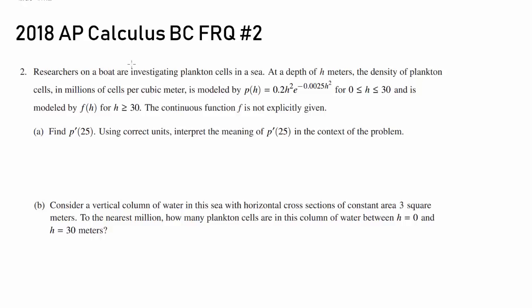Let's move on to problem number two. Researchers on a boat are investigating plankton cells in a sea. After escalator, we now have plankton. At a depth of H meters, the density of plankton cells in millions of cells per cubic meter - make sure you pay attention to the unit - is modeled by P(H) = 0.2H² times e^(-0.0025H²).